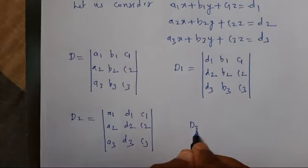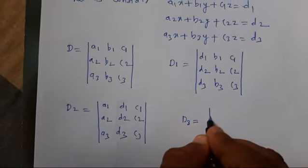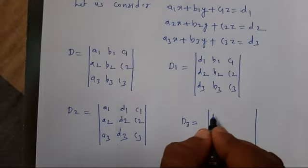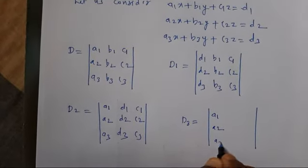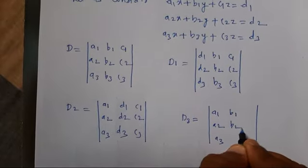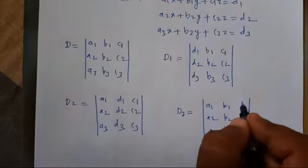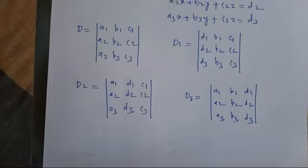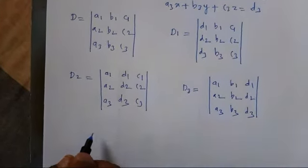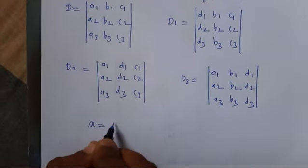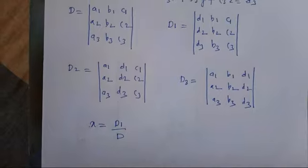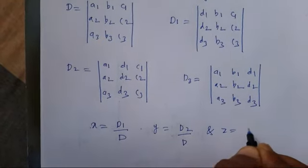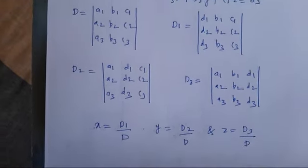Lastly, to find the value of Z, I use D3 — I replace the last column by d1, d2, d3, keeping columns A1 A2 A3 and B1 B2 B3 as they are. The formulas are: x = D1/D, y = D2/D, and z = D3/D. This is the method, and I will now solve one example using it.